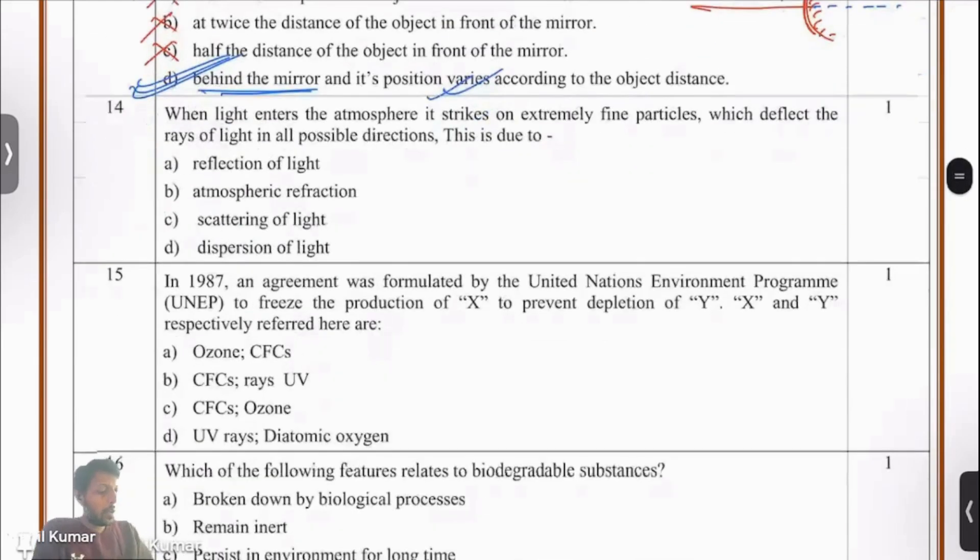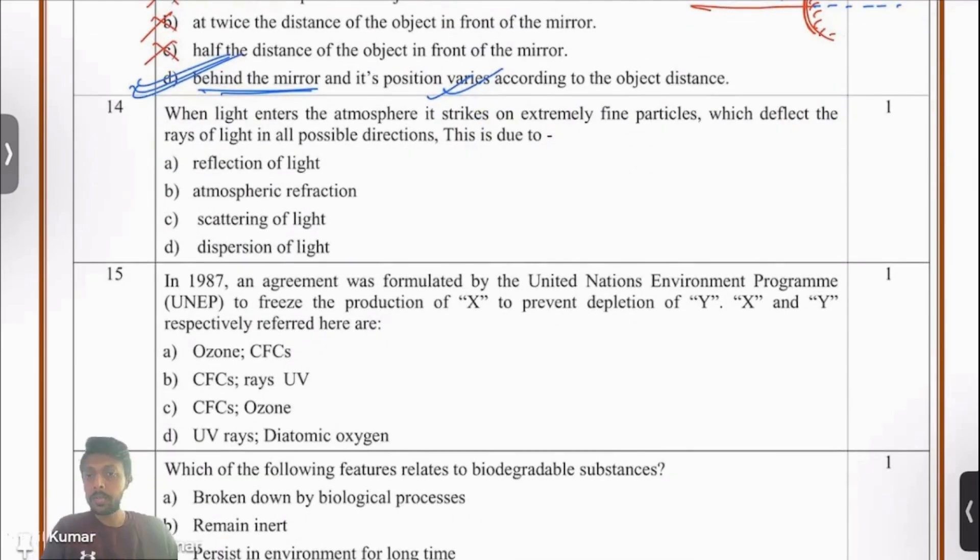Let's move on to the 14th question. When light enters the atmosphere, it strikes on extremely fine particles which deflect the rays of light in all possible directions. This is due to, so we have to identify the technical term that is given to this phenomena. Is it scattering or is it dispersion? Of course, it's not reflection of light.